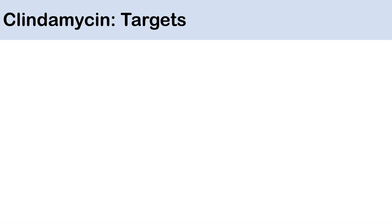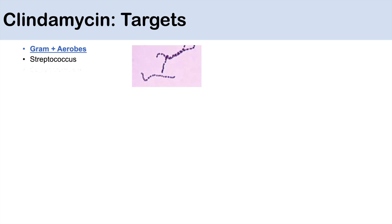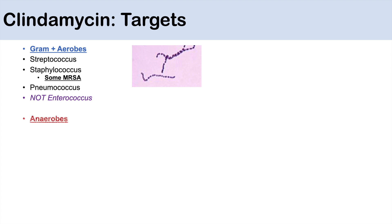What are some of the bacteria that clindamycin targets? Clindamycin works well for gram-positive coverage: streptococcus, staphylococcus, and in some cases MRSA, and pneumococcus, but has no coverage of enterococcus. Clindamycin also has very good anaerobic coverage for bacteria like Bacteroides, Fusobacterium, and B. fragilis.